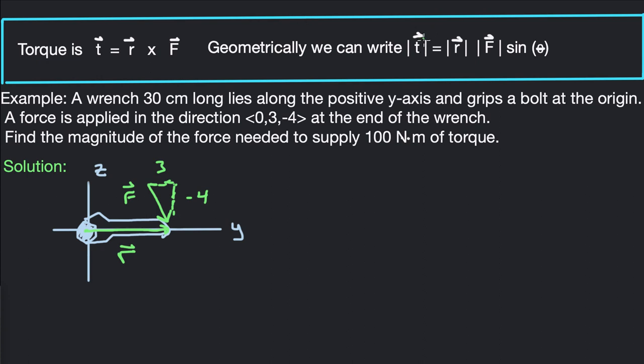However, geometrically, if we take the magnitude, we know that the cross product, if we take the magnitude of the cross product, that's just the magnitude of the vectors times the sine of the angle between them.